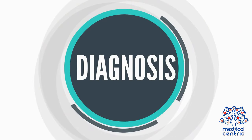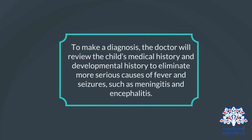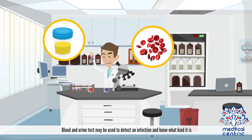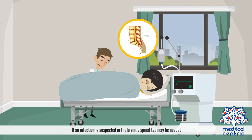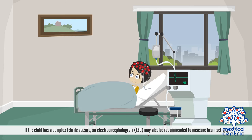To make a diagnosis, the doctor will review the child's medical history and developmental history to eliminate more serious causes of fever and seizures, such as meningitis and encephalitis. Blood and urine tests may be used to detect an infection and identify what kind it is. If an infection is suspected in the brain, a spinal tap may be needed. If the child has a complex febrile seizure, an electroencephalogram, or EEG, may also be recommended to measure brain activity.